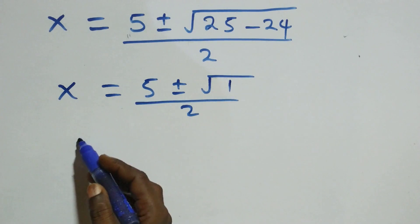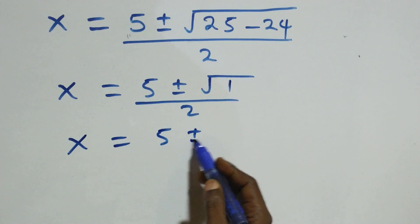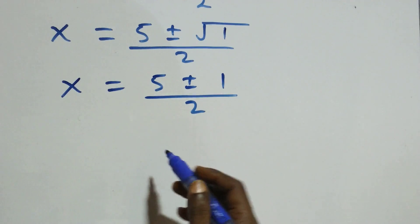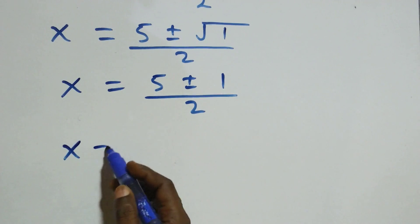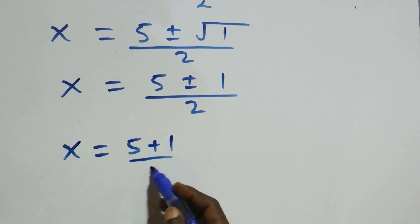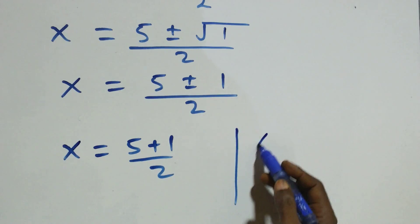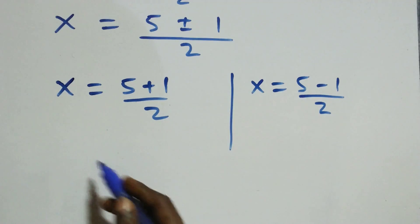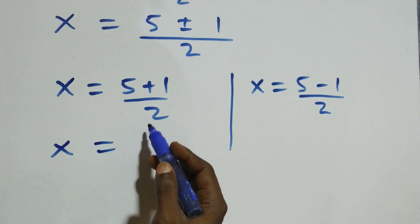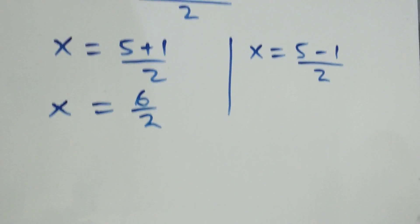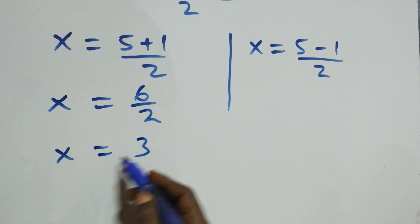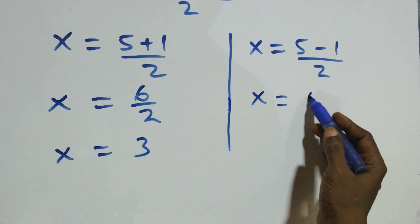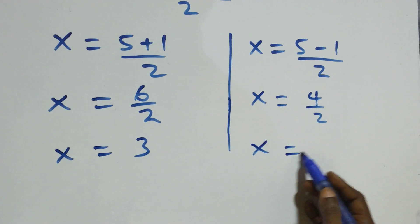Since the square root of one is one, we have x equals five plus or minus one, over two. The two possible cases are: x equals (five plus one) over two, which gives x equals six over two, so x equals three; or x equals (five minus one) over two, which gives x equals four over two, so x equals two.